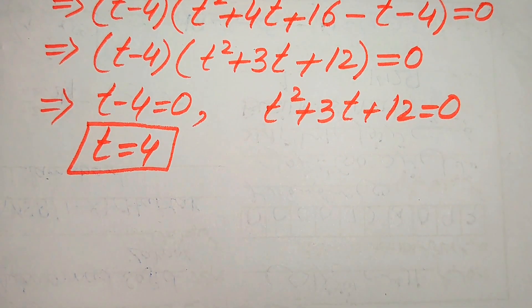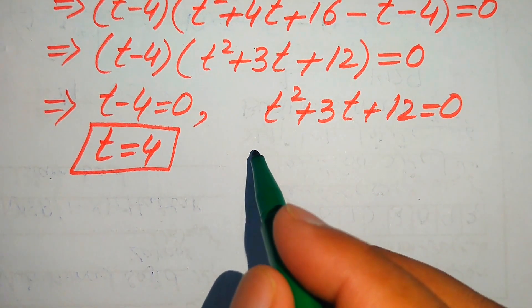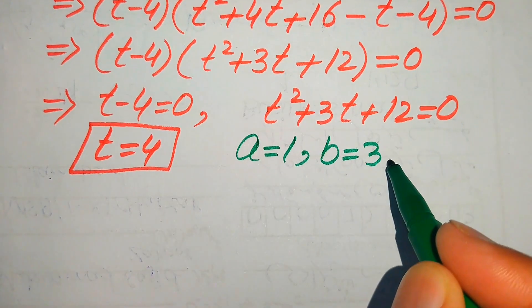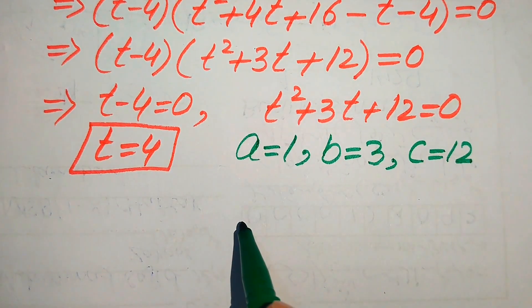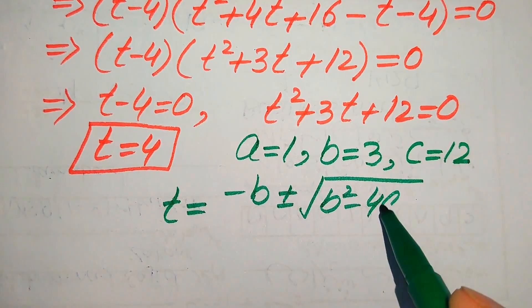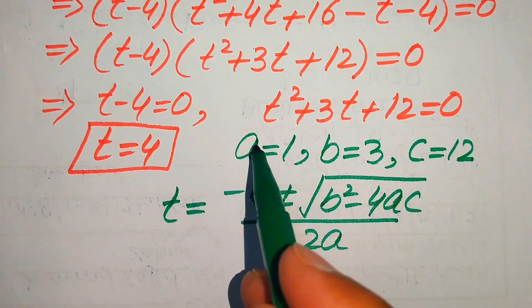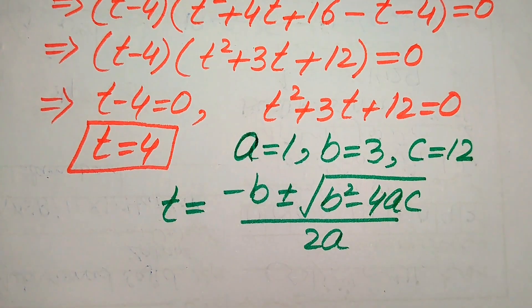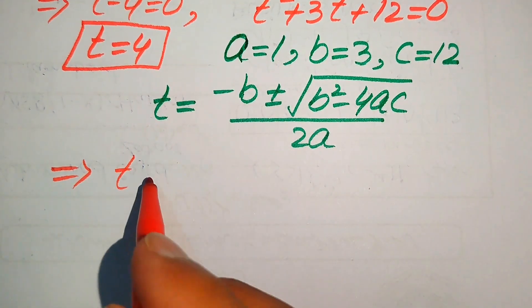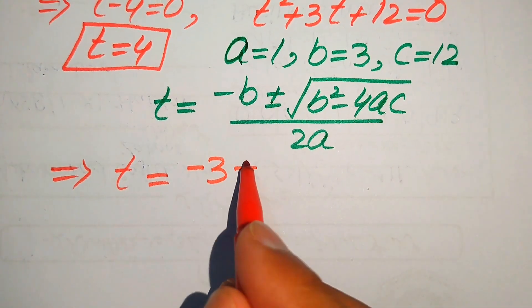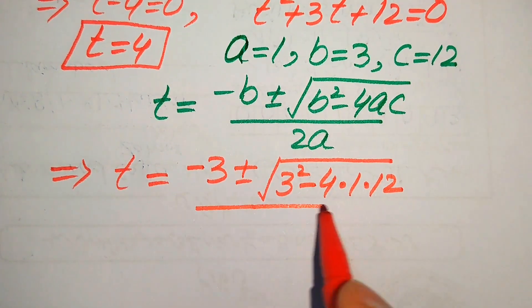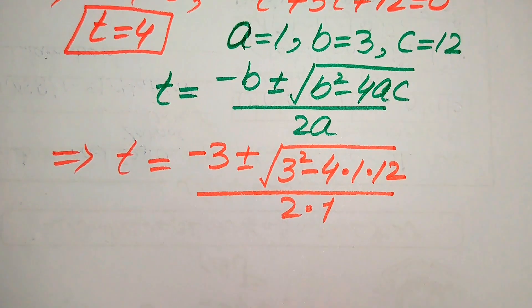To find the other roots we solve the quadratic equation t squared plus 3t plus 12 equals 0 using the quadratic formula. The coefficients are a equals 1, b equals 3, and c equals 12. The quadratic formula is t equals minus b plus or minus square root of (b squared minus 4ac), divided by 2a. Substituting the values: t equals minus 3 plus or minus square root of (3 squared minus 4 times 1 times 12), divided by 2 times 1.